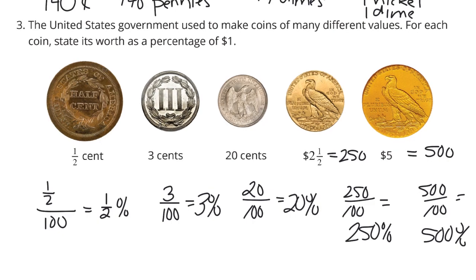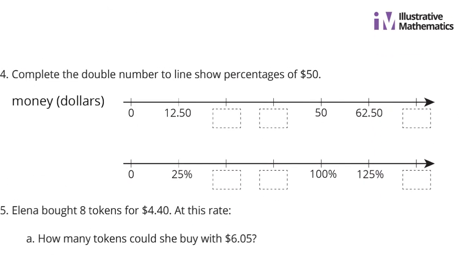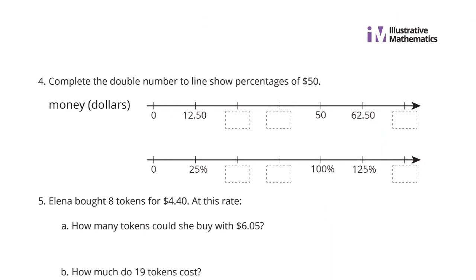And as we continue on to question four now, we're going to be looking at a double number line and percentages of $50 now. Complete the double number line to show percentages of $50. Well, notice that we're divided here into 25%. And so I like to start off with my percents. And if I count up by 25, 25, 50%, plus another 25 is 75%.